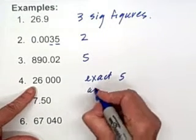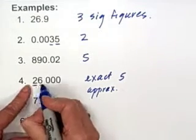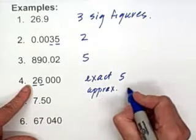However, if it's a measurement, so it's approximate, we would only count the 2 and the 6. So that would be 2.